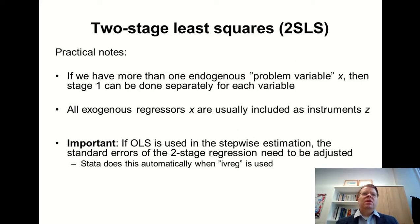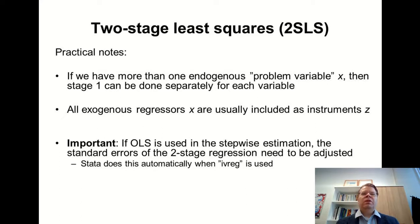A couple of practical notes on two-stage least squares. We can also use this if we have more than one endogenous variable. We should classify our explanatory variables x into two subsets: those that are exogenous, which are not correlated with epsilon, and those that are endogenous, which do correlate with the error term. Note also that all these exogenous regressors are typically also included as instruments and are included in the first stage regression — that's important for the theoretical integrity of two-stage least squares.